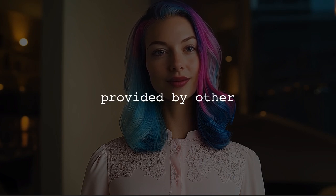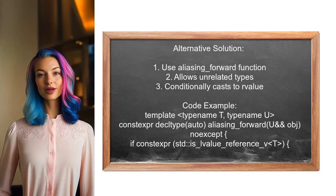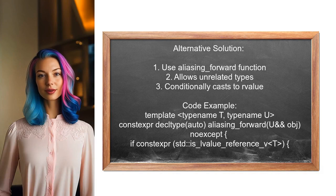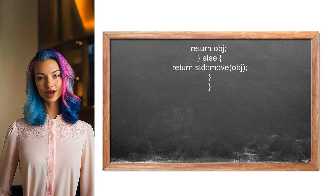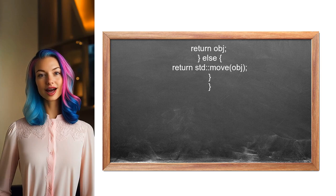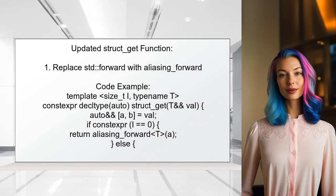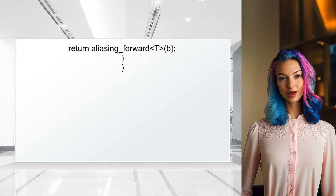Now, let's look at the answers provided by other users. An alternative solution is proposed using a function called aliasing_forward. This function allows for unrelated types in its template and argument, and it conditionally casts the argument to an R value if the template argument is not an L value reference. You can implement this in your struct_get function. Instead of using std::forward, use aliasing_forward to return the correct reference type based on the value category of the struct.